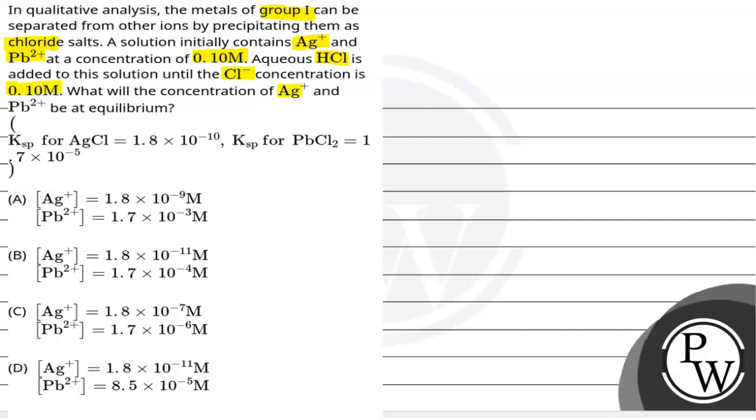What will be the concentration of Ag+ and Pb2+ at equilibrium? Ksp values are given, and we have 4 options. We have to select the correct option among these.